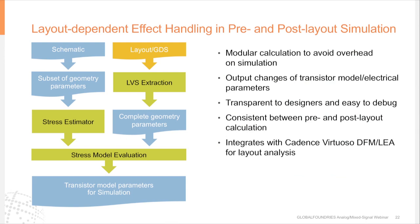This slide shows more detail on how this is performed. There are two paths. The first starts with the layout GDS, goes through LVS extraction, extracts complete geometry parameters — the golden extraction — then evaluates stress VTH and mu0 modifiers and augments transistor model parameters in the netlist. The second path is at the schematic level, relying on Global Foundries P-cells to extract a subset of geometry parameters to estimate stress. It is an approximation, but we have seen consistent results between pre- and post-layout. This flow integrates with Cadence Virtuoso and LEA for layout analysis.